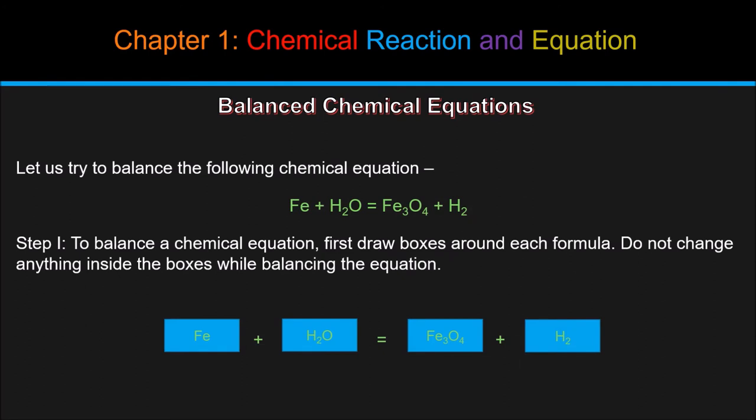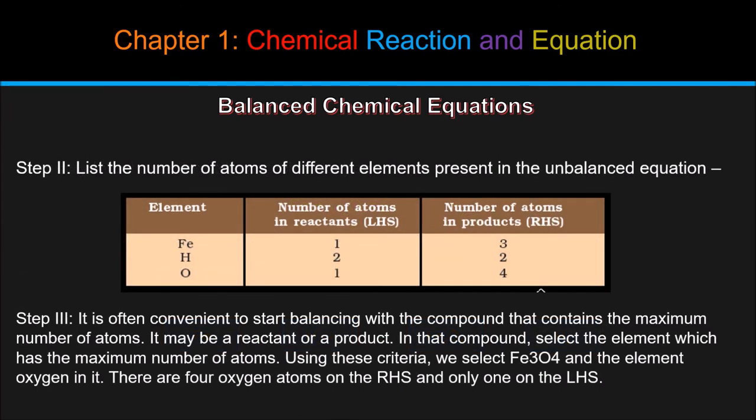Let us try to balance the following chemical equation: Fe plus H2O equals Fe3O4 plus H2. Step 1: to balance a chemical equation, first draw boxes around each formula, as we have drawn blue color boxes. Do not change anything inside the boxes while balancing the equation. Step 2: list the number of atoms of different elements present in the unbalanced equation. For instance, see the table we have created. Fe, that is iron, has 1 number of atoms in reactants and 3 number of atoms in products. H has 2 in reactants and 2 in products. O has 1 number of atoms in reactants and 4 number of atoms in products.